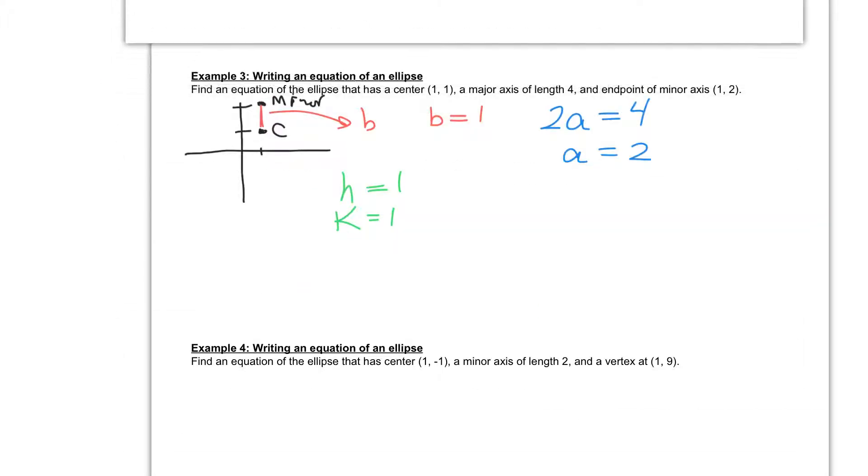So going back to our problem, we can write our answer. And we know that we have (X minus H), H being 1, squared, plus (Y minus our K value), which is 1, squared.